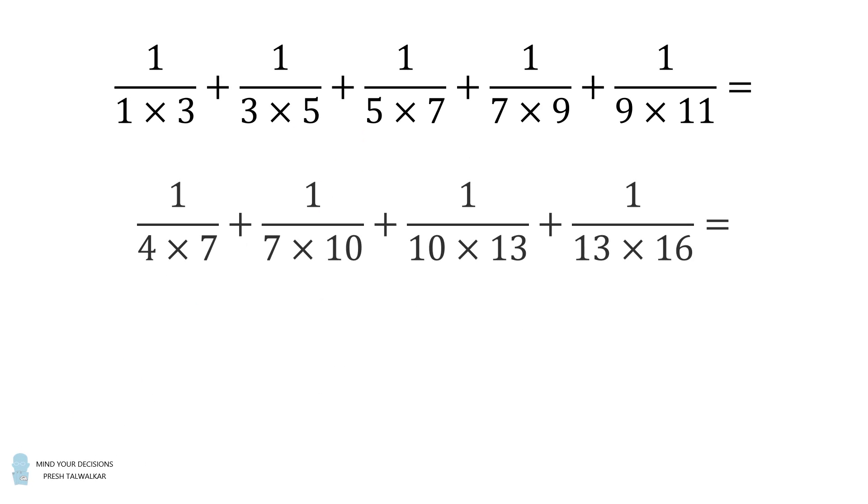Hey, this is Presh Talwalkar. Solve for the value of the following three sums. The first sum is 1 divided by 1 times 3 plus 1 divided by 3 times 5 plus 1 divided by 5 times 7 plus 1 divided by 7 times 9 plus 1 divided by 9 times 11.